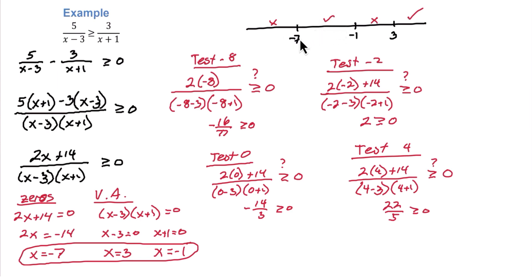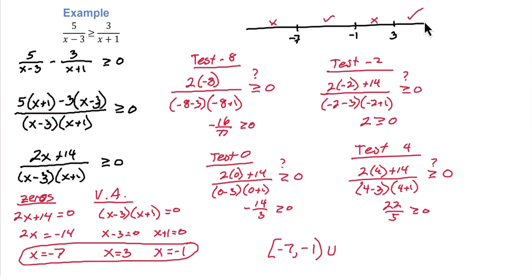We have this second interval between negative 7 and negative 1. So we have to question, do we include the negative 7 or the negative 1? Looking at the original inequality, we do have equal to in it, so we can include zeros because they're x-intercepts, but we cannot include vertical asymptotes. The negative 7 is a zero, which means we can include it — we'll bracket that. Then going up to negative 1, can we include the negative 1? Notice negative 1 is an asymptote, so we can't include it — negative 1 will get a parenthesis. Then we'll union that with 3 to infinity. Can we include the 3? We have equality, but 3 is a vertical asymptote, so it is a parenthesis. Then infinity always gets a parenthesis. And we have our solution set.